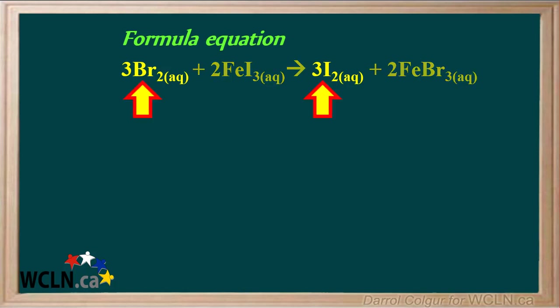The aqueous bromine and iodine are in elemental molecular form and they do not dissociate into ions. As long as the dissolved iodine is dilute, it will remain dissolved in water rather than forming solid iodine. FeI₃ and FeBr₃ are soluble aqueous ionic compounds, so they will occur in dissociated form in the solution.